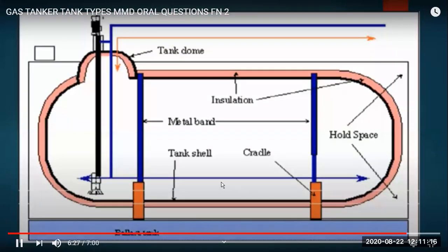This is the type C independent tank - not connected to the hull, cylindrical, with a primary barrier and secondary barrier outside is the hold space. You have a cradle going from port to starboard like a liferaft cradle. There is a tank dome for the pump, loading line, venting lines, and recondensing lines all coming through here. Ballast tanks are visible at the bottom in this side view.